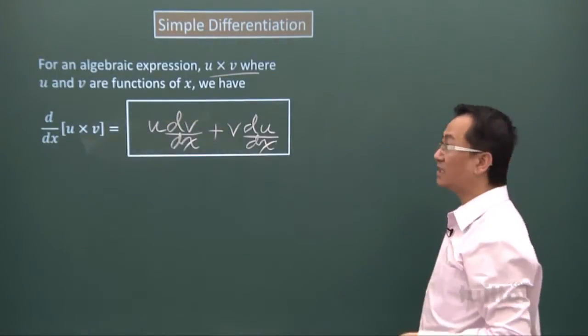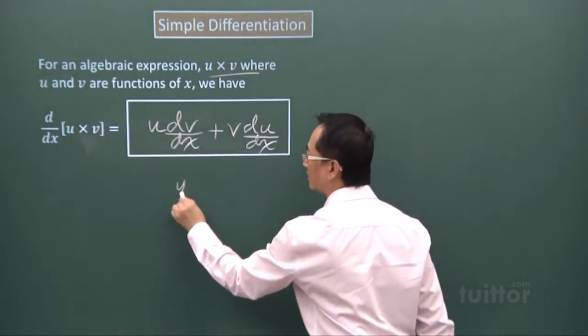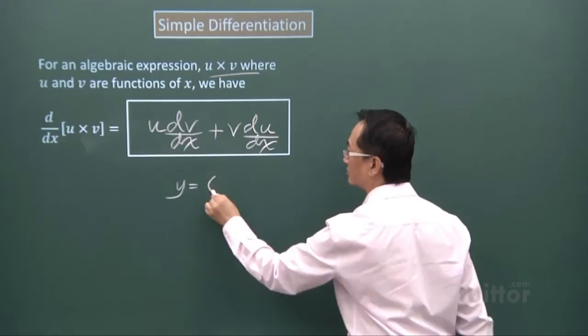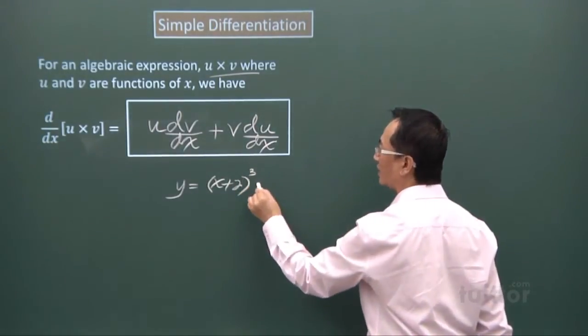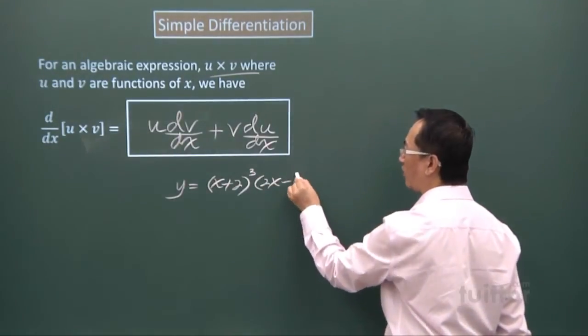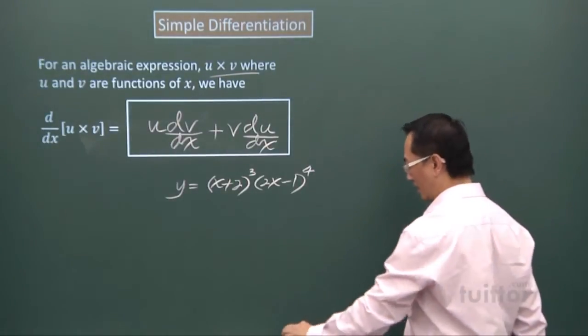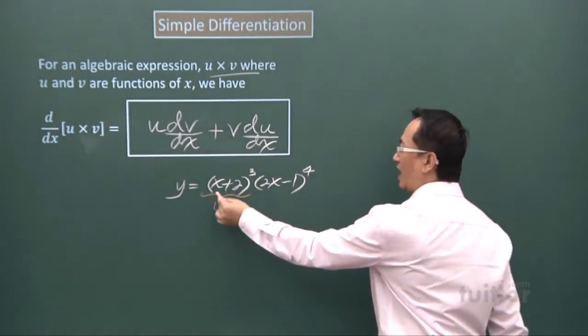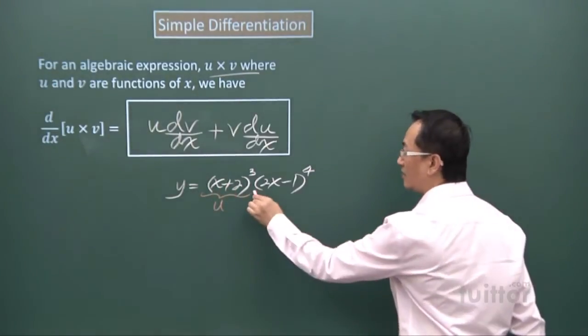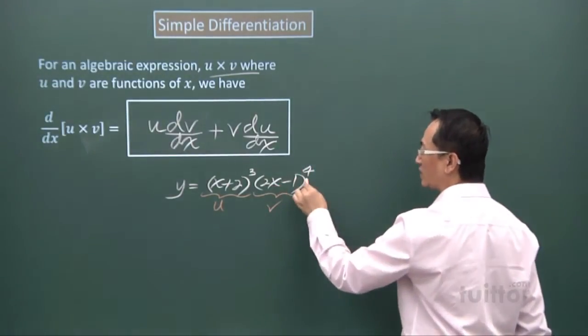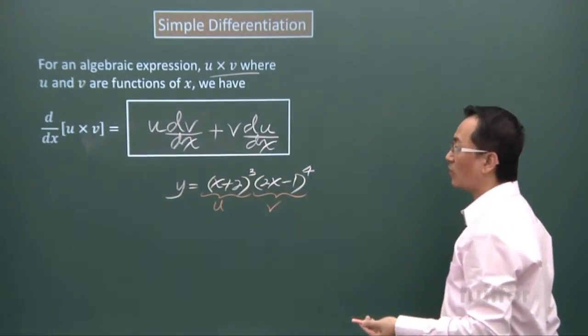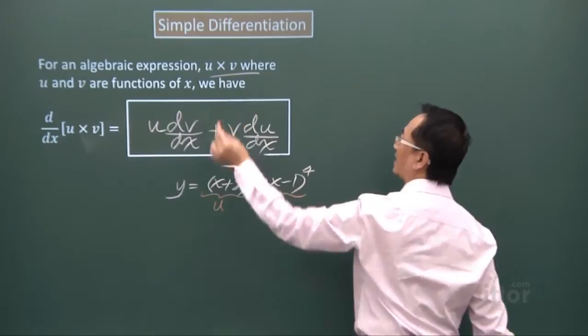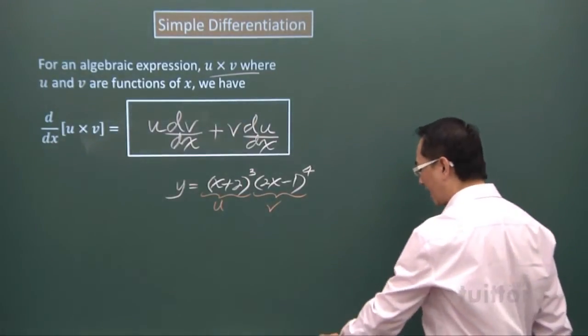So when you consider this rule, there are many questions that we can apply the product rule to. You can have y equals x plus 2 to the power 3 times 2x minus 1 to the power 4. You can see here the u is the whole expression and this expression is in terms of x, and the v is again the whole expression here and it's in terms of x. So this arrangement, a product here, looks exactly like that u times v.